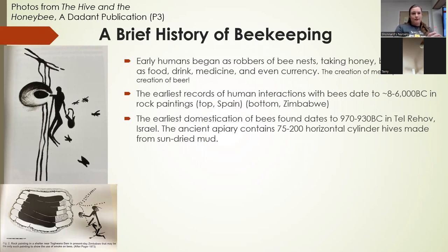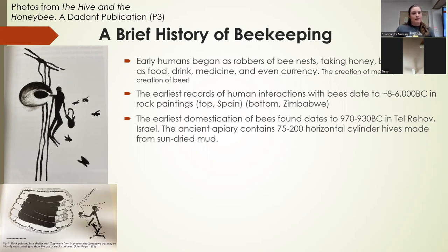So if you had a beehive that you staked out as your own claim, that would be a form of currency. The earliest records of human interactions with bees, involving this kind of robbing, date back to 8,000 to 6,000 BC in rock paintings. The top photo is from Spain and the bottom is from Zimbabwe — this is actually the first known record of humans using smoke to calm bees during harvest.